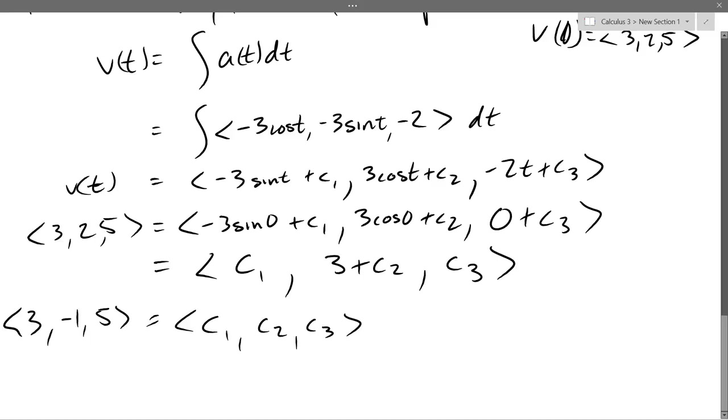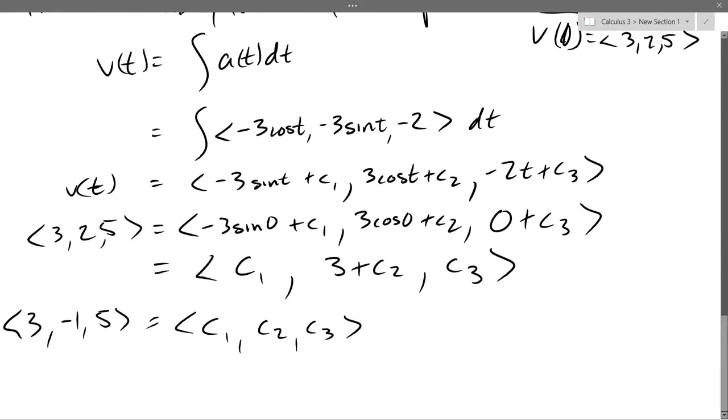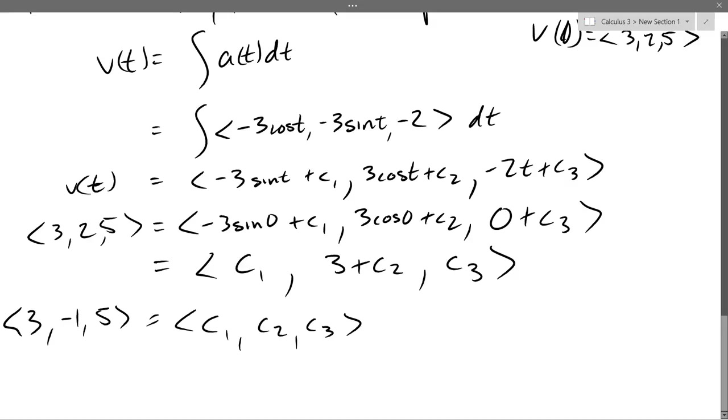So c1, c2, and c3 are 3, negative 1, positive 5. You can do some algebra if you want, but I think these are probably easy enough to just say what the numbers are. So 3 is c1, 2 is 3 plus c2, so c2 is negative 1, and then c3 is 5.